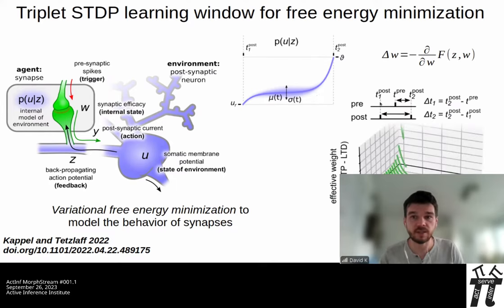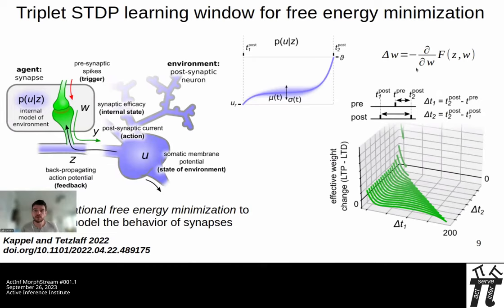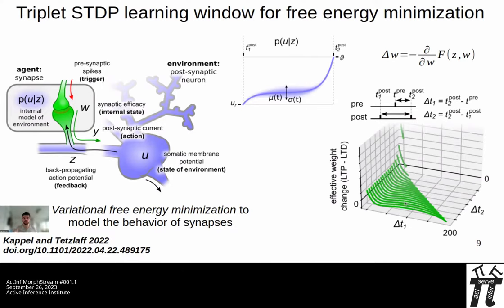We get automatically a learning rule that only depends on the difference between two postsynaptic spikes, delta T2, and the difference between the postsynaptic spike and the actual input triggered on the presynaptic side. We compute a lookup table for what update the synapse would need to make to learn optimally in terms of this free energy principle. The shape shows a strong dependence on the postsynaptic firing rate, but also a dependence on the typical STDP that Sarah mentioned — the relative positioning of pre- and post-synaptic spikes.